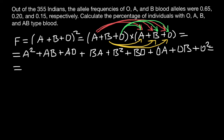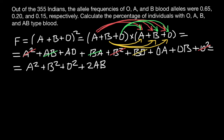Now let's rearrange. We have A squared, B squared, and O squared — so let's write: A squared + B squared + O squared. Now take a look — we have AB and also BA; these are the same, just like 2×3 and 3×2 both equal 6. So we cross out AB and BA and replace them with +2AB. Similarly, we cross out BO and OB to get +2BO.